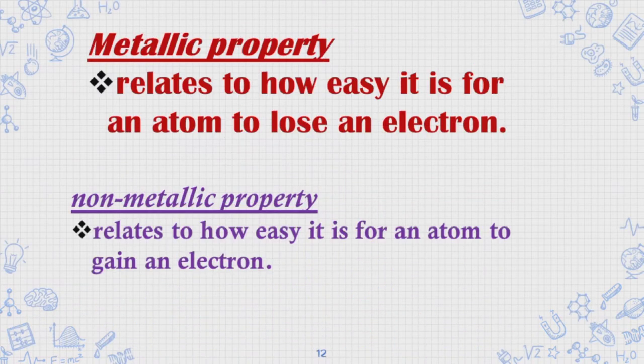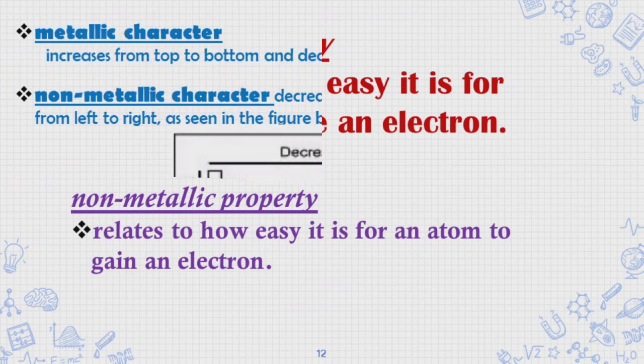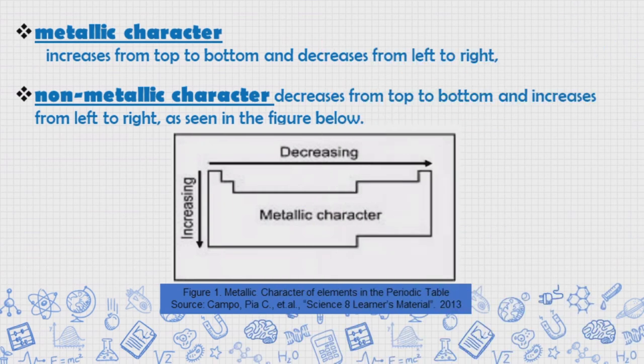Metallic property relates to how easy it is for an atom to lose an electron, while non-metallic property relates to how easy it is for an atom to gain an electron.